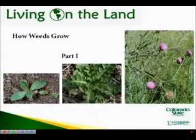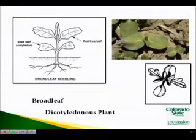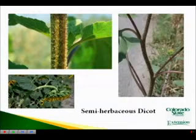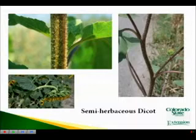Weeds differ in their growth habits. Broad-leaf dicotyledonous plants have two seed leaves, cotyledons, in each seed. Dicots have broad leaves and may have woody stems. Some species, for example sunflower, only become woody in old parts of stems and roots. These are referred to as semi-herbaceous dicots.